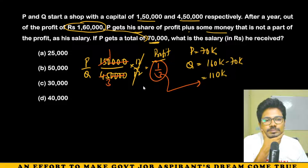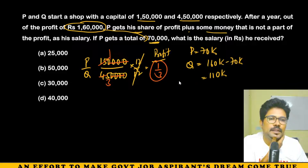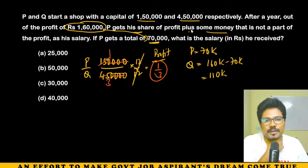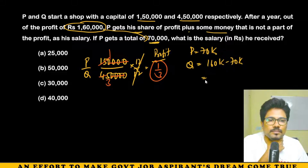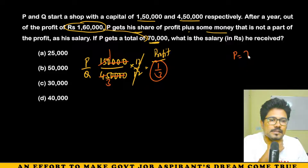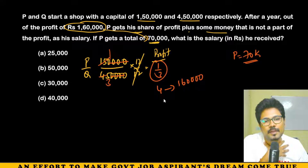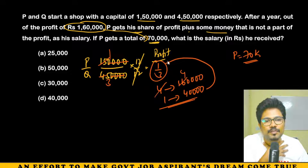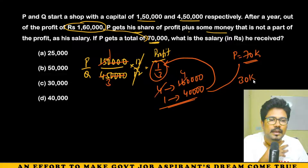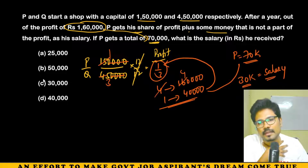4 units = 1,60,000, so 1 unit = 40,000. P's profit share is 1 unit = 40,000. But P actually received 70,000 total. The difference between 70,000 and 40,000 is 30,000. That 30,000 is the salary P received. Simple question — answer is 30,000.